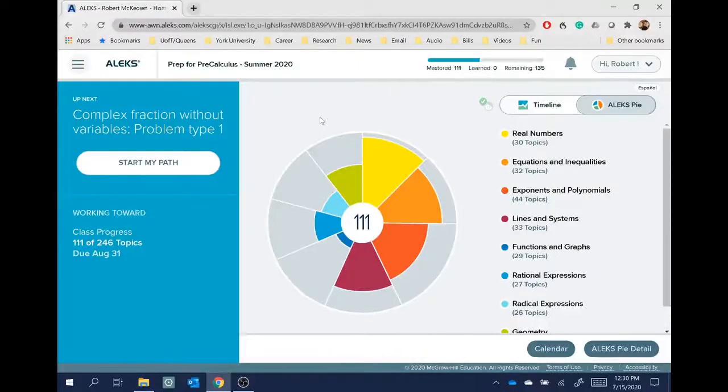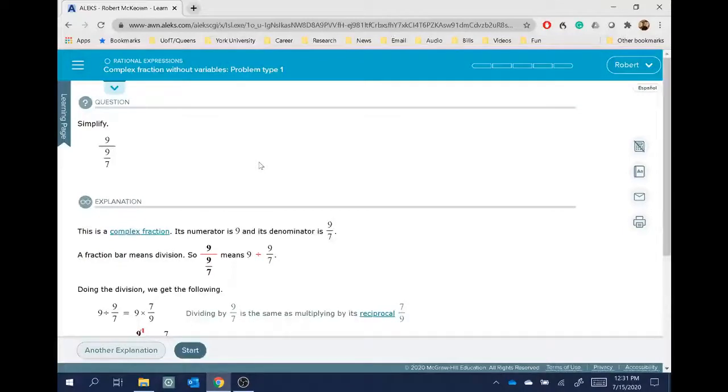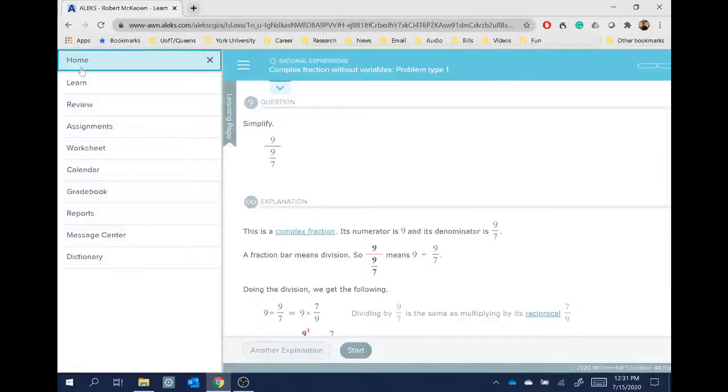So here I am on Alex. I've got an account that I've created where a certain number of topics I've mastered through the knowledge check. One thing you can do to get extra practice is you can just click on start my path. And Alex will start asking you questions, presumably in order of the topics it felt that you did not show sufficient mastery of when you completed that knowledge check. Now, you do have some more control over what you want to learn. And so if I go up to the top left corner, there are those three horizontal bars. I'll click on that. And when I click on that, I get a whole bunch of options here.